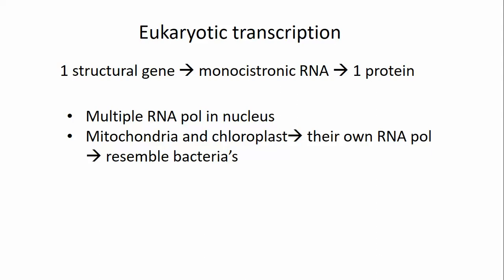In eukaryotic systems, one structural gene yields one monocistronic RNA, which yields one protein. Multiple RNA polymerases are present in the nucleus, and organelles like mitochondria and chloroplasts have their own RNA polymerase, which resembles bacteria's RNA polymerase.